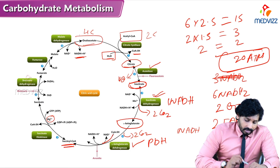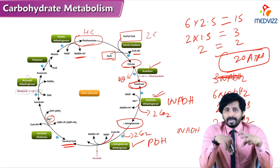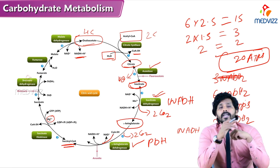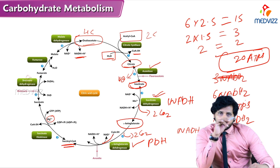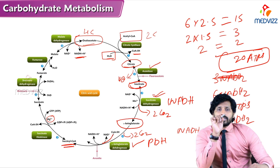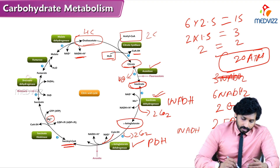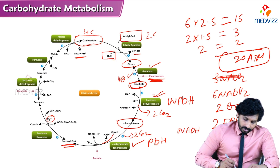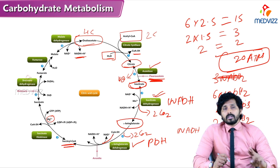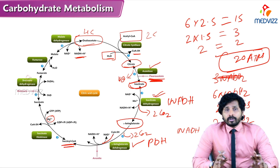At the end of the cycle, oxaloacetate is regenerated. Oxaloacetate is the starting substance of TCA cycle which is consumed, and it is also regenerated at the end — that is why Krebs cycle is called a cycle. Regarding inhibitors: fluoroacetate inhibits aconitase, and arsenite inhibits alpha-ketoglutarate dehydrogenase — these are two inhibitors of TCA cycle.